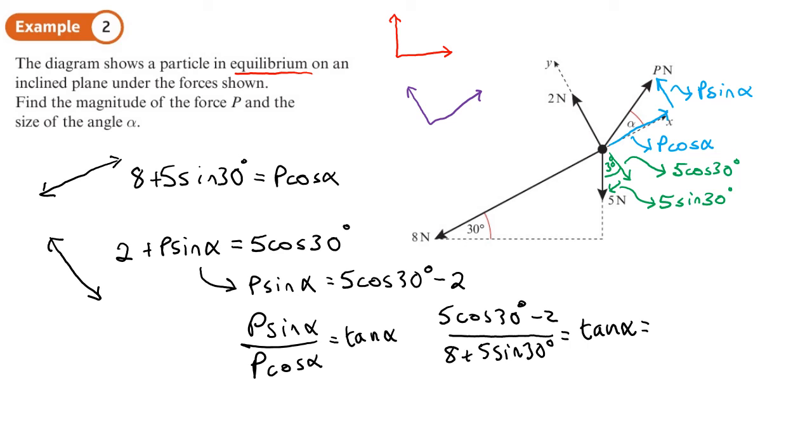So what does tan alpha equal? Let's do this on our calculator. The exact value is minus 4 plus 5 root 3 over 21. So if we do the tan inverse of that to find alpha. So shift tan inverse answer. And I get 12.5121 degrees. Let's call that 12.5 degrees. Three significant figures. So that's alpha.